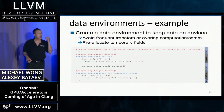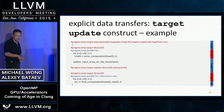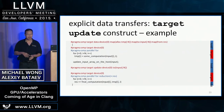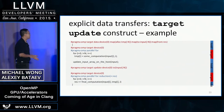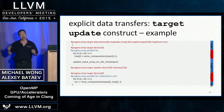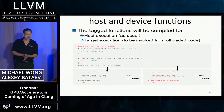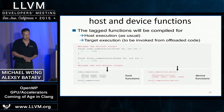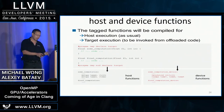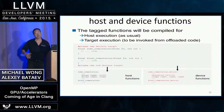Frequent data reload between host and device is what really slows down computation. The `target update` construct lets you synchronize partial data: for example, `OMP target update device` pushes new input values to the device mid-computation. You can also use `from` to pull partial results back. Additionally, you can tag functions with `declare target` to generate different code for host and device — x86 assembly on host, and device-specific assembly for Intel Xeon Phi or NVIDIA on the device side.